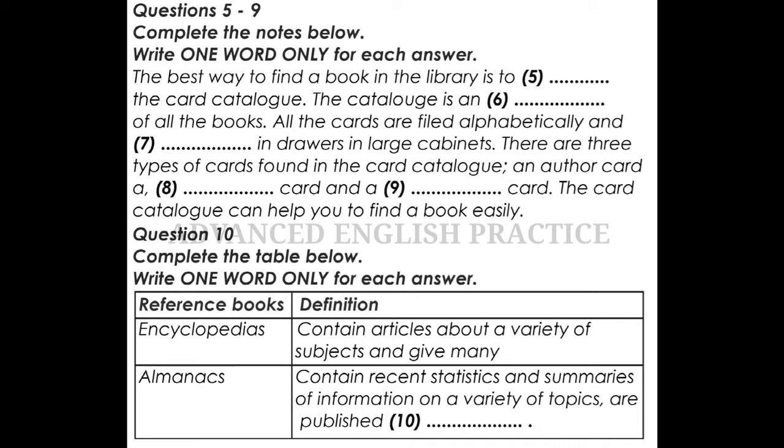The Dewey Decimal System provides a category for every type of non-fiction book. The best way to locate a book in the library is to use the card catalogue. The card catalogue is an index of all the books in the library. Information about a book is listed on cards, all filed alphabetically and stored in drawers in large cabinets. The card catalogue can help you locate a particular book, a book on a certain subject, or a book by a particular author.